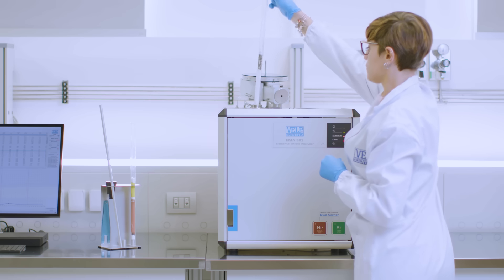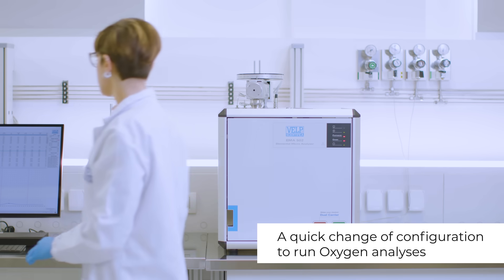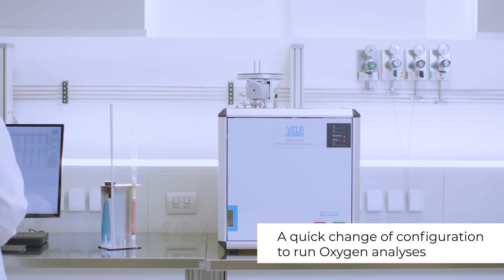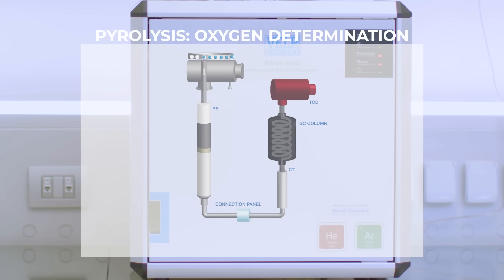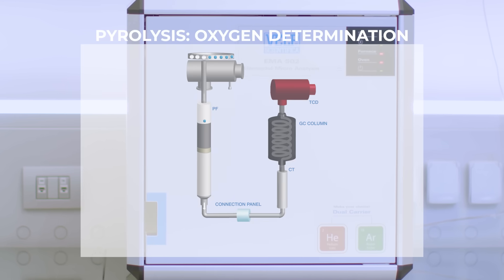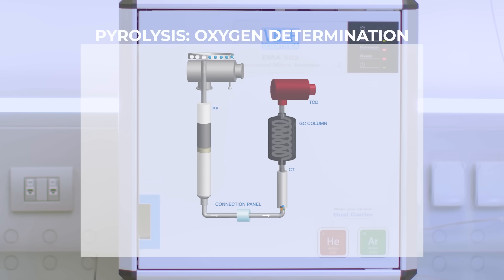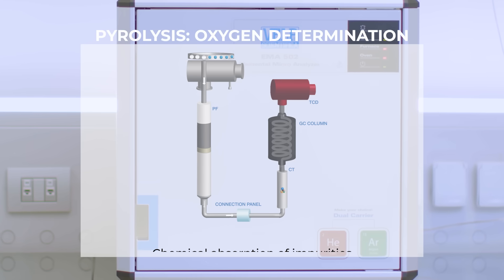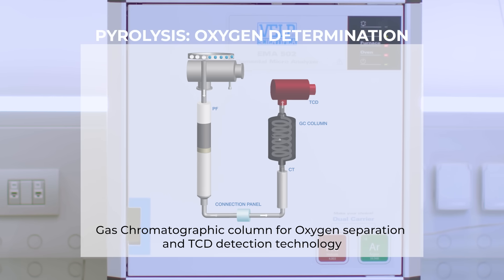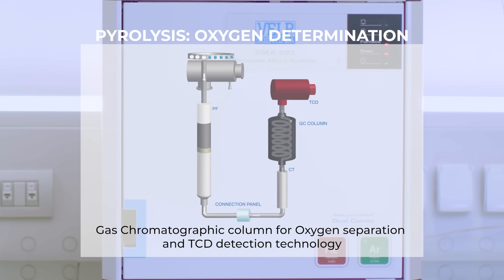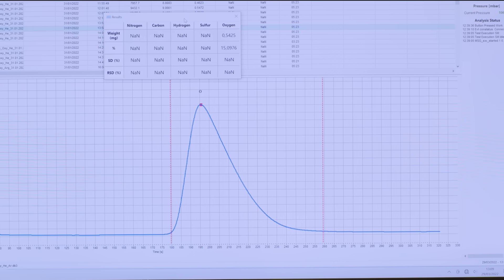To perform oxygen analysis, it is not necessary to have another instrument — just a quick and simple change of configuration and consumables. The sample is purged with the carrier and drops into the reactor, where high-temperature pyrolysis takes place. The flow then passes through a chemical trap to absorb all impurities before being conveyed to the gas chromatographic column and the TCD for oxygen quantification.